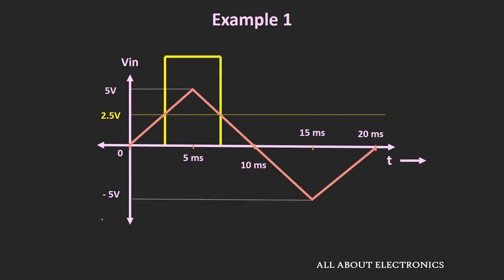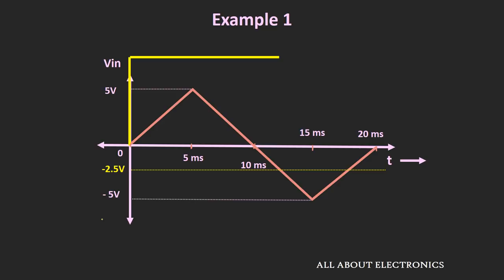Instead of 2.5V, if we set the reference voltage to −2.5V, the output will remain low only 25% of the time, giving a duty cycle of 75%. By changing the reference value we can change the duty cycle of the output waveform. Now try to find the reference voltage such that the output waveform has a duty cycle of 10%, and let me know your answer in the comments.